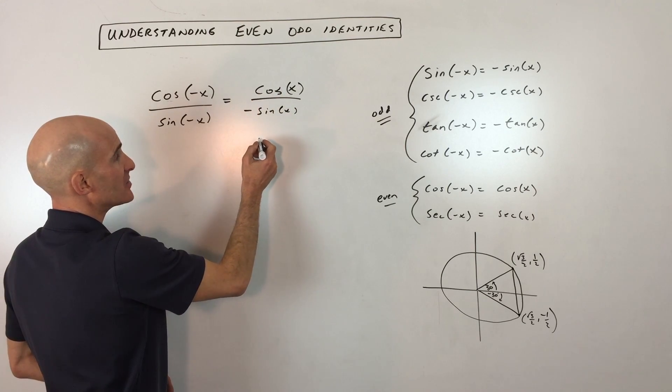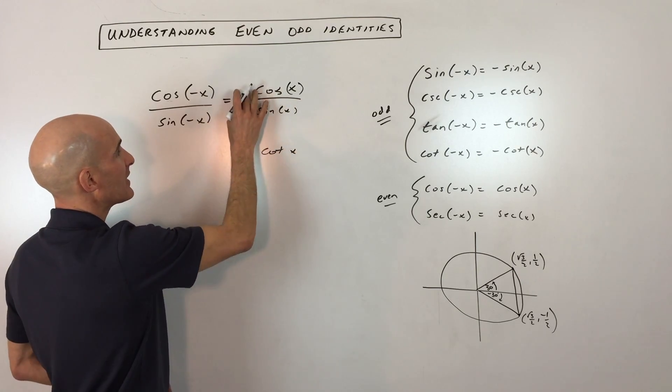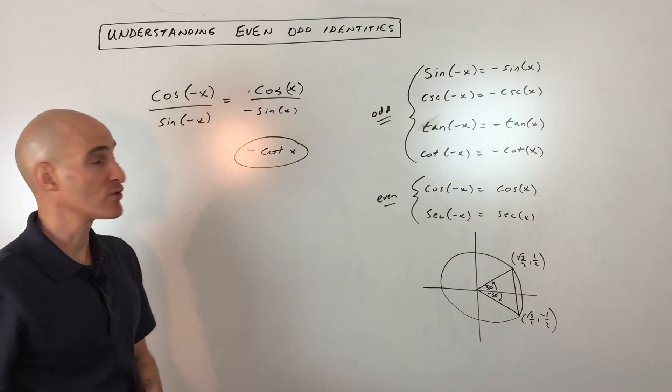Cosine divided by sine is cotangent of x. But a positive by a negative equals a negative. So this whole thing will simplify down to negative cotangent of x.